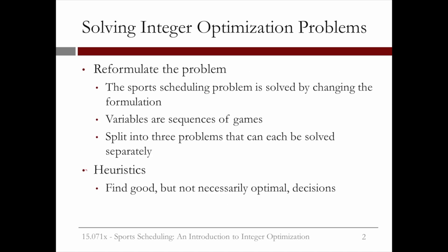Many different tricks are used to solve large integer optimization problems. One is to reformulate the problem. The sports scheduling problem with more teams is often solved by changing the formulation — instead of the decision variables we discussed in this lecture, the variables are sequences of games. Additionally, the problem can be split into three smaller problems that can each be solved separately and much faster than solving the whole problem.